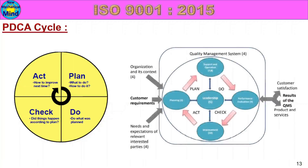This is the ISO 9001 process flow. Inputs: organization and its context, customer requirements, needs and expectations of relevant interested parties — class 4 input. Leadership, plan, support, operation, execute, performance evaluation. Observe gaps, improvement. This is the Plan-Do-Check-Act cycle in the ISO 9001 principle.